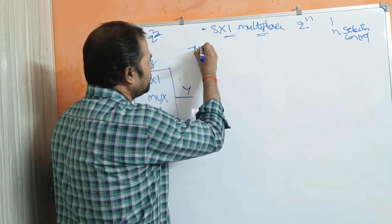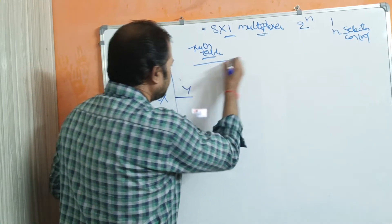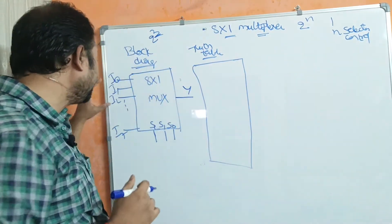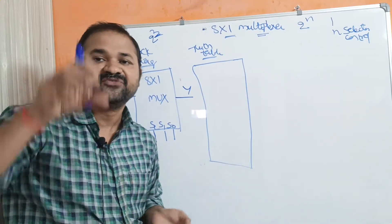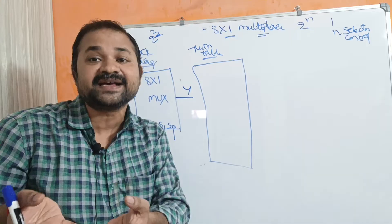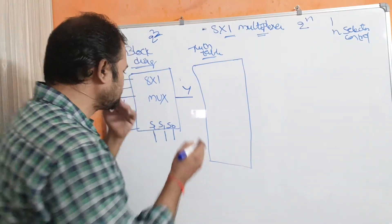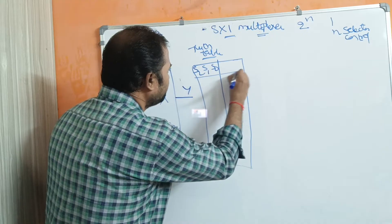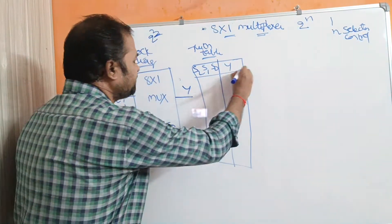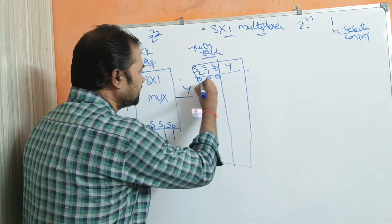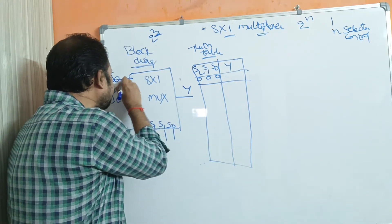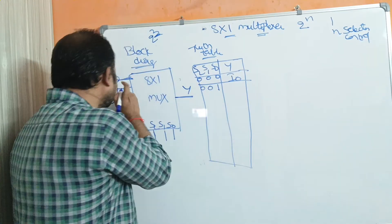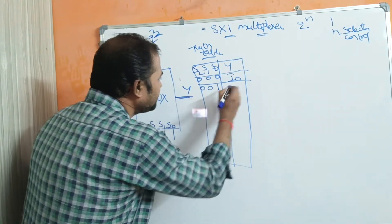Now let us see the truth table. Out of all the 8 data input lines, which data input line will be displayed as output is decided based upon the selection inputs S2, S1, S0, and Y is the output. If the selection inputs are 0, 0, 0 then i0 will become active and be displayed as output. If the selection inputs are 0, 0, 1 then i1 will be active and displayed as output.